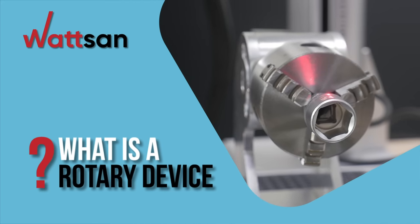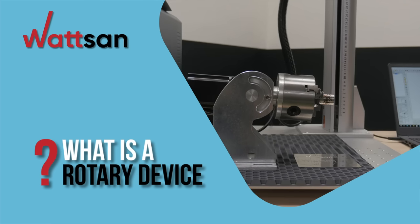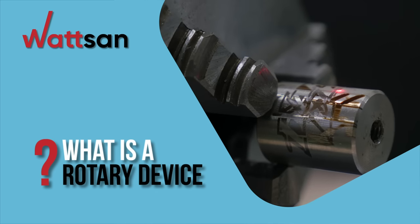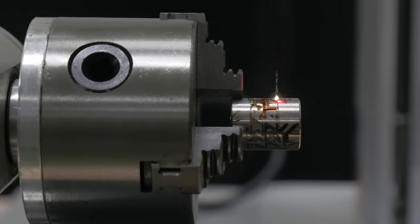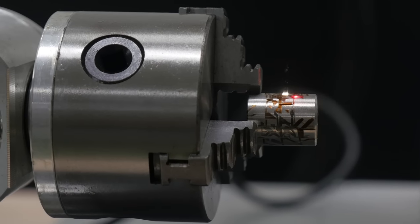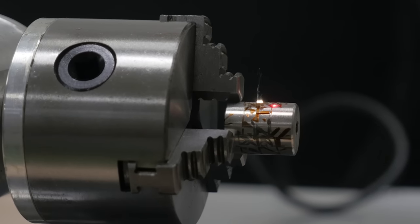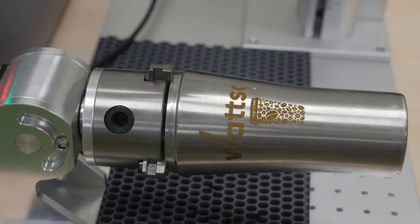Laser fiber markers are widely used in various industries for marking and engraving on a variety of materials. One of the key components that helps improve the efficiency and functionality of the marker is the rotary device.